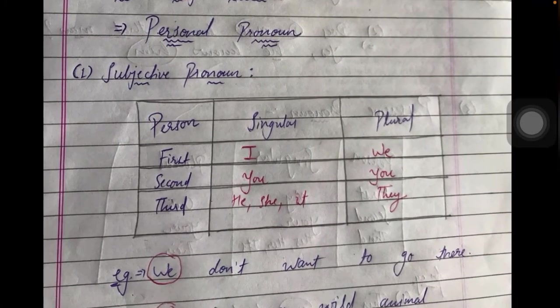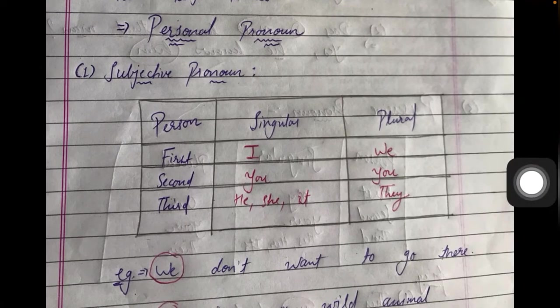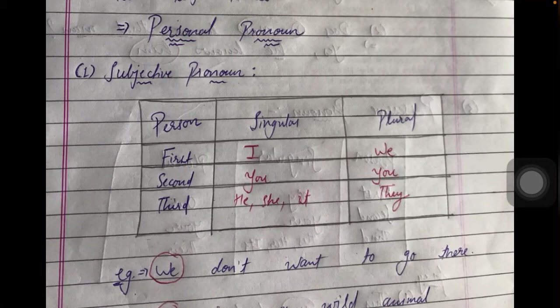The first one is subjective pronoun. A subjective pronoun is a pronoun used in the place of the subject. First you must know what the subject is, because without identifying the subject you cannot replace it. For example, 'The woman is rich' — here 'the woman' is the subject. We replace it with 'she,' so the sentence becomes 'She is rich.'